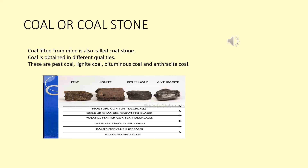What is coke? The coal obtained from a mine undergoes destructive distillation. At high temperature distillation, the coke obtained is called hard coke, and at low temperature distillation, the black residue obtained is called soft coke. Coke is used as a reducing agent in metal extraction.